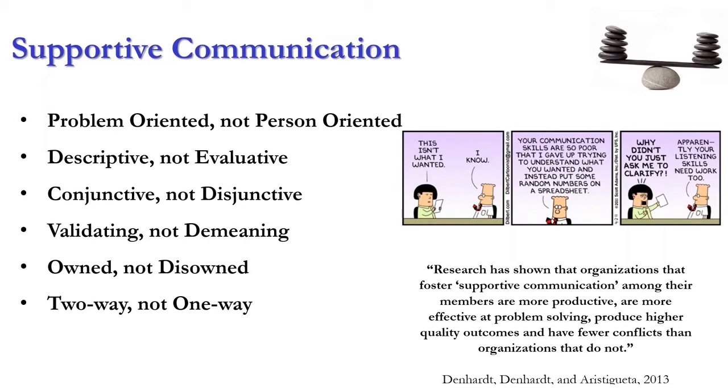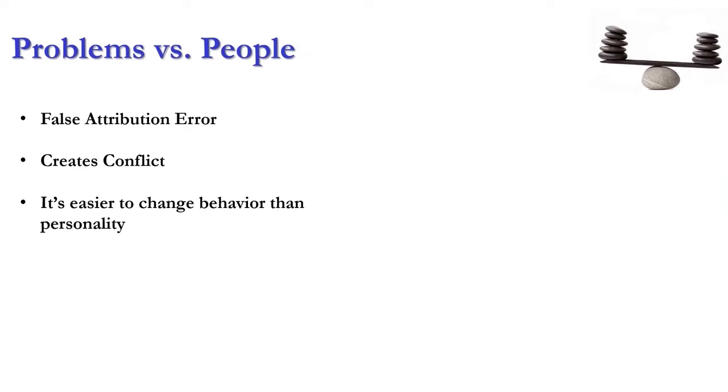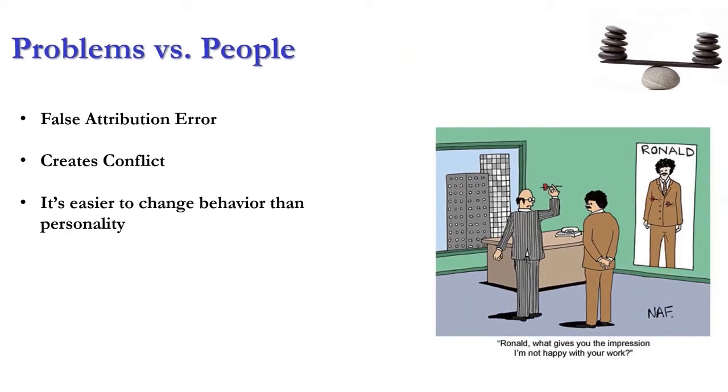Let's take problem orientation versus person orientation first. First, we want to talk about false attribution error. False attribution error is this: If I am late to work, I attribute it to external circumstances. I was late to work because traffic was crazy, because I was up so late preparing this webinar, and because my kid is sick.